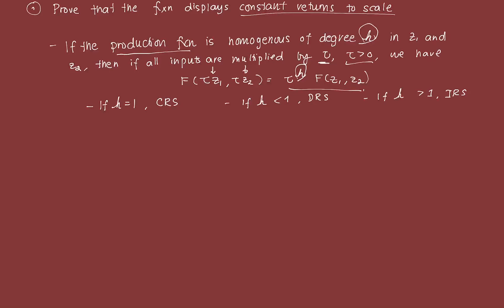If that degree H equals 1, the function displays constant returns to scale — doubling Z1 and Z2 doubles output. If H is less than 1, the function displays decreasing returns to scale, meaning doubling inputs yields less than double the output, say 1.5 or 1.2 times. If H is greater than 1, the function displays increasing returns to scale, meaning output more than doubles, say 2.5 or 3 times.